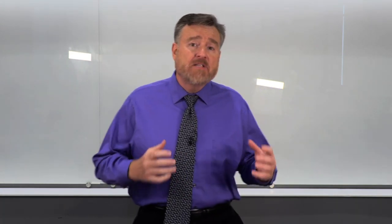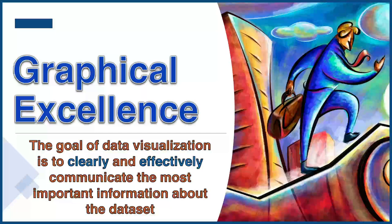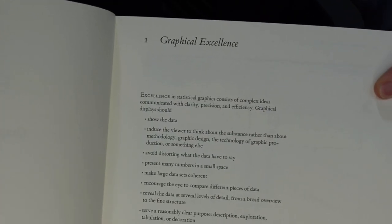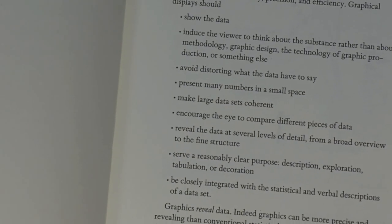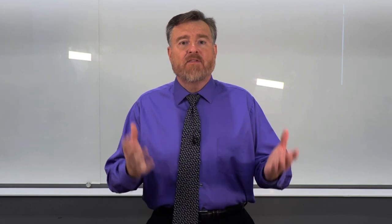In this book, Dr. Tufte describes the qualities of what he calls graphical excellence — what is it that makes one graph particularly good? On page 13, Dr. Tufte answers this question saying that graphics reveal data. The whole point of creating graphics and descriptive statistics for our variables is so that we can reveal what the data actually show. What then are the qualities of graphical excellence?